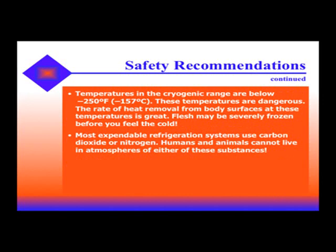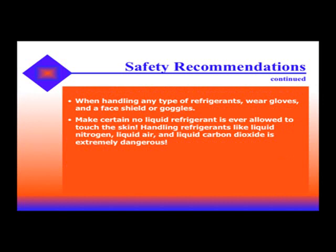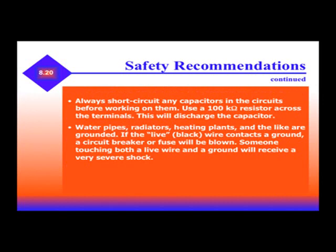Temperatures in the cryogenic range are below negative 250 degrees and can seriously remove body heat — skin and flesh may be severely frozen before you feel the cold. Most expendable refrigeration systems use carbon dioxide and nitrogen, and humans and animals cannot live in the atmospheres of either of these substances. When handling any type of refrigerant, wear safety goggles, face shields, and gloves. Make sure that no liquid refrigerant is ever allowed to touch your skin. Handling refrigerants like liquid nitrogen, liquid air, and liquid carbon dioxide is extremely dangerous. Always short-circuit any capacitors to discharge them. Always be sure that water pipes and radiators are grounded — if the live black wire contacts the ground, a circuit breaker or fuse will blow, and someone touching both a live wire and ground may receive a very severe shock.